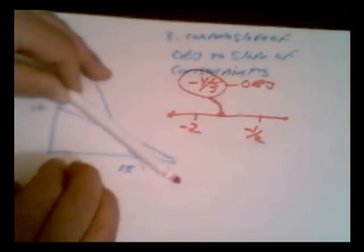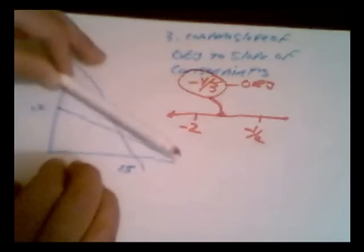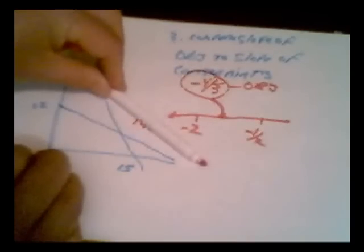So, what that tells you is the slope of the objective function is in between the slope of these two constraints. So, therefore, as we move it out, the last point we touch as we leave the feasible region is 12, 6. Or the first point we touch as we come in to the feasible region here is 12, 6. The slope of the objective function is in between there.